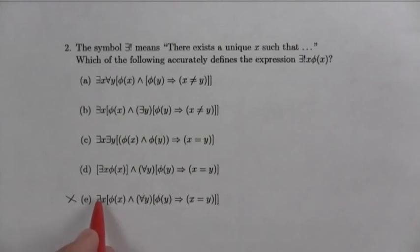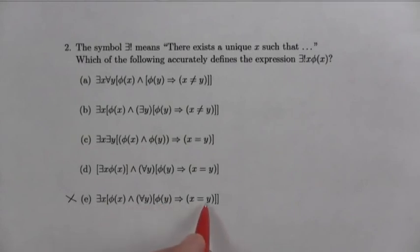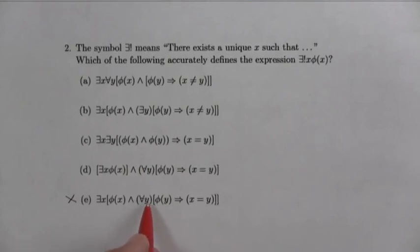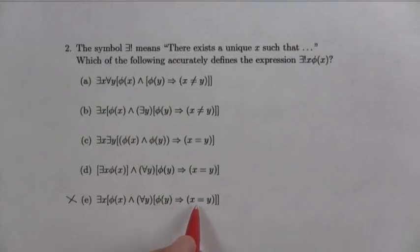And any other number that satisfies φ has to be equal to x. So there's two parts. That says the first part says the x does satisfy φ. And the second part is the part that says it's unique, because it says that anything else that satisfies φ has to be, in fact, equal to x. In other words, x is the only one. Because no matter which other y you look at, if it satisfies φ, it turns out that you're actually looking at x in the first place.